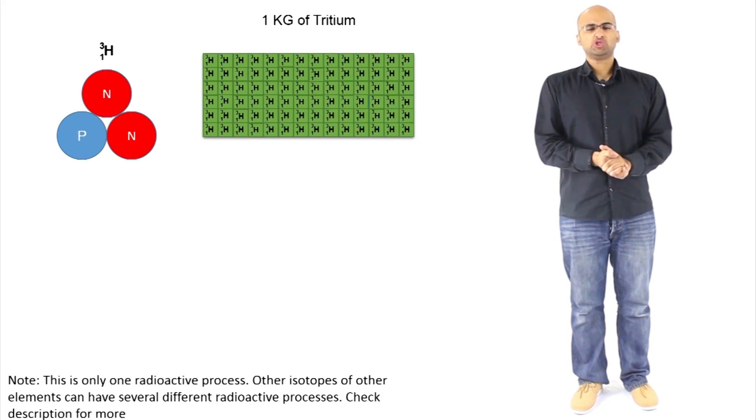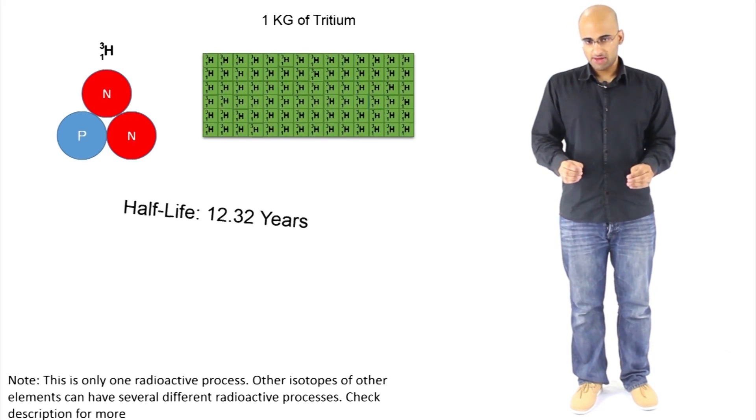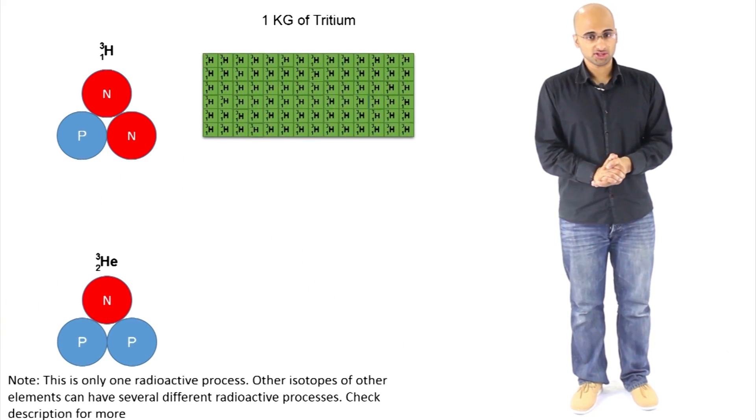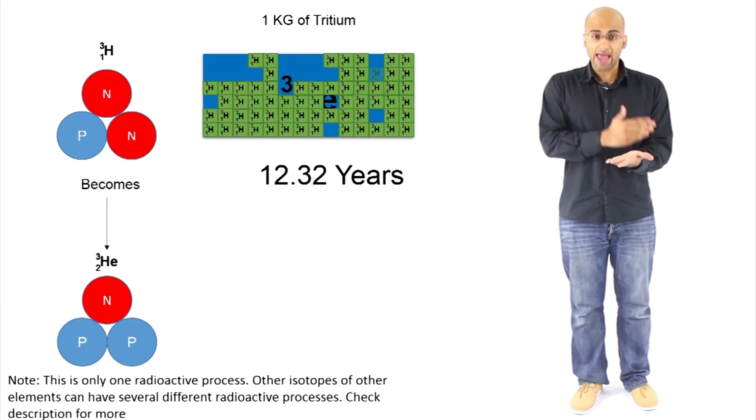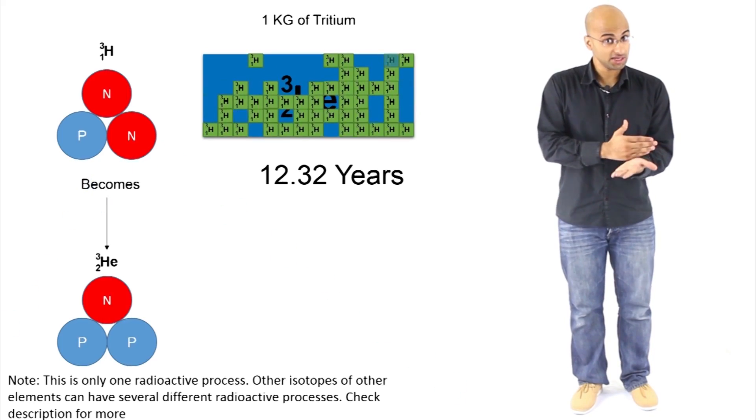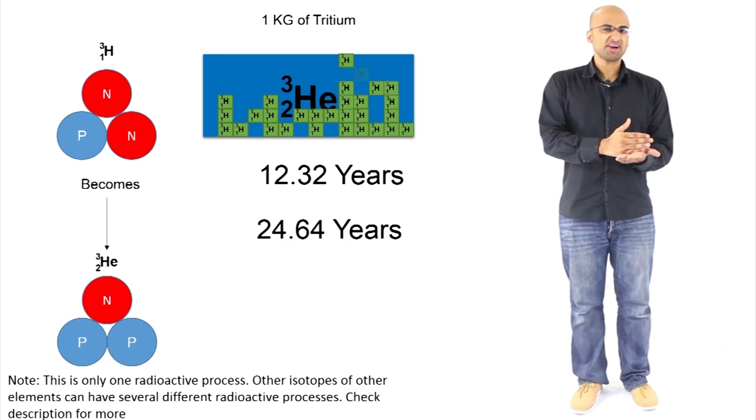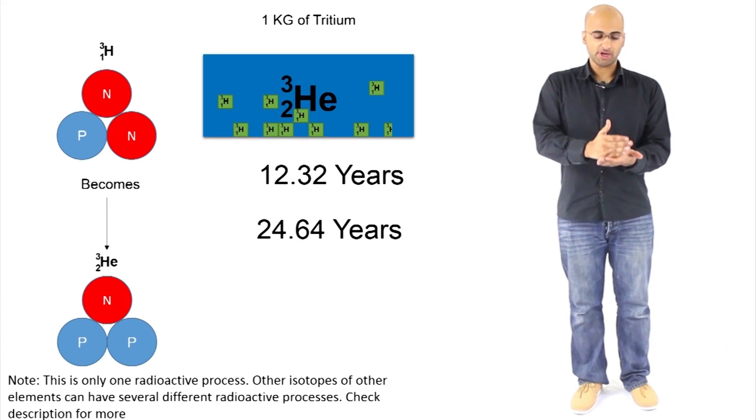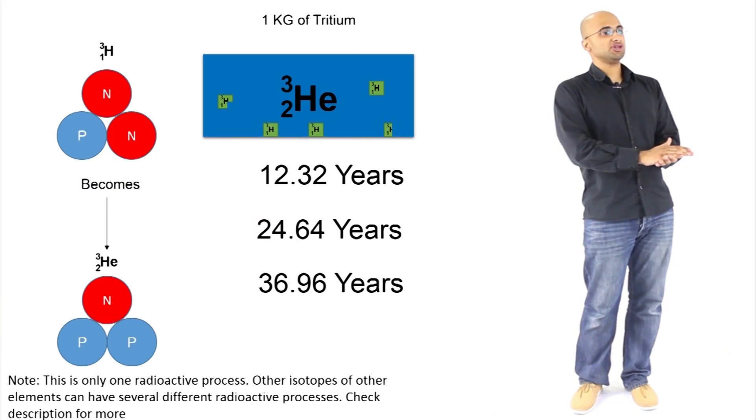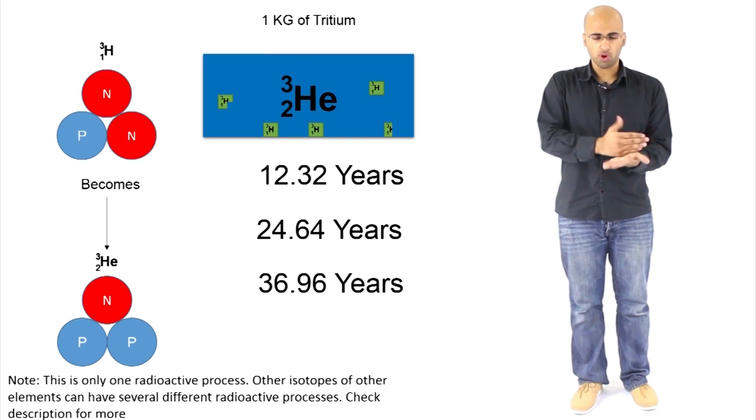The half-life of tritium is 12.32 years. This means that if you wait 12.32 years, half of this 1 kilogram of tritium is likely to decay into something else, change into something else. If you wait another 12.32 years, half of the remaining tritium will decay into something else. And so on and so forth. The process keeps on going.